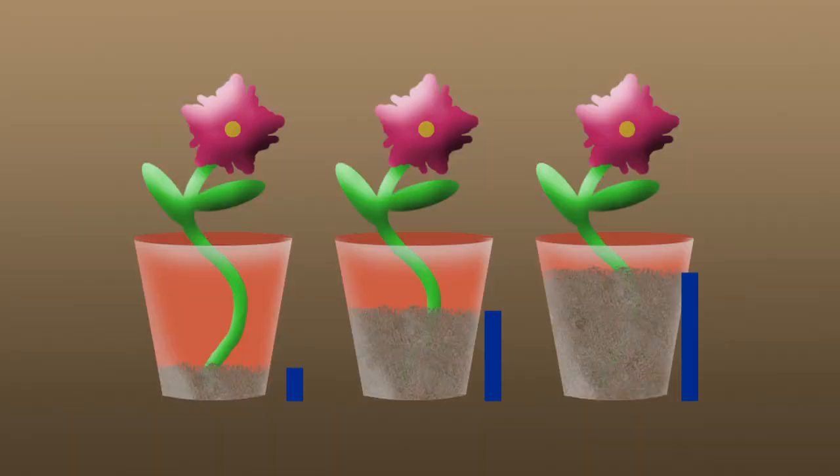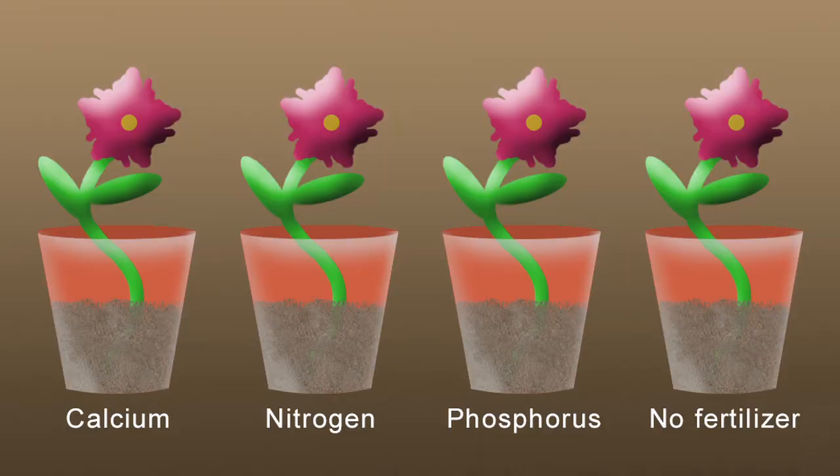So you might be able to vary the amount of dirt, and we would want to keep track of the amount of dirt, or the different types of fertilizers. How many types of fertilizers might you try? Generally, you want to experiment with probably at least three different options for each one.